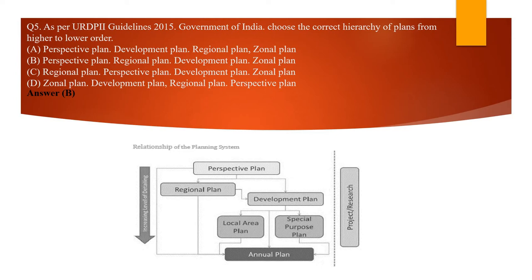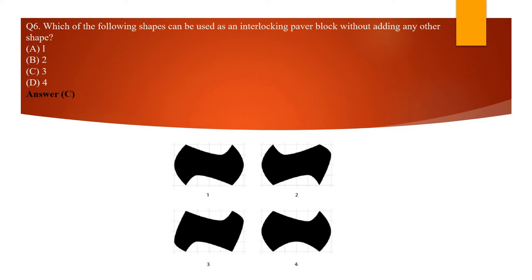The next question: as per the UDPFI guidelines of 2015, identify the correct hierarchy of plans from higher to lower. The answer is: Perspective Plan, Regional Plan, Development Plan, and Zonal Plan. This hierarchy is shown in the UDPFI guidelines diagram. Even without knowing the answer, it is easy to reason: Perspective Plan is for a state level, Regional Plans for a city, then smaller areas have Development Plans and Zonal Plans. The words themselves give enough context to answer.